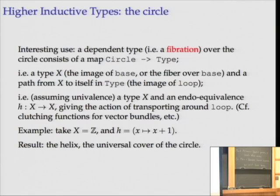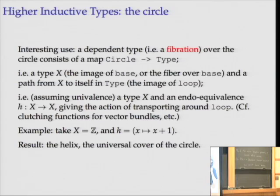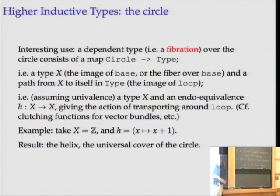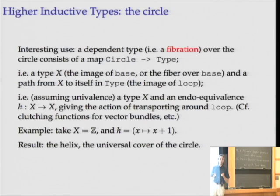With the univalence axiom, that path from x to itself is an equality between types, which is exactly an equivalence between types. So we're looking for a type x and an endo-equivalence of the space itself. In fibration language, that endo-equivalence corresponds to the action of transporting around the loop — if you're familiar with vector bundles and clutching functions, this may start ringing a bell. For example, taking a comparatively accessible example: the integers and the map adding one to an integer, which is certainly an equivalence.